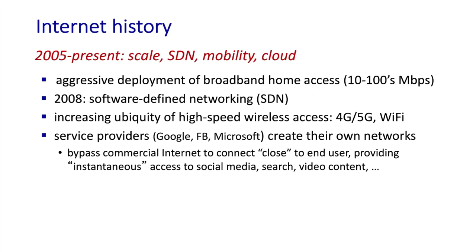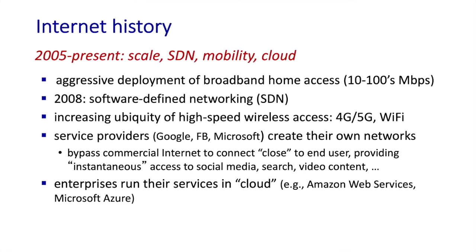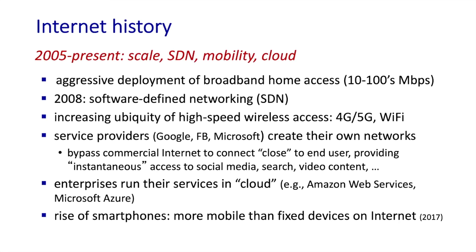These content providers are bypassing the commercial internet tier-one ISPs to connect close to end users, so that they can provide near-instantaneous access to social media, search, and video content. We've also seen enterprises running their services in the cloud through Amazon Web Services and Microsoft Azure — we'll look at data center networks when we get to chapter five. And lastly, we've seen the rise of smartphones and an increased emphasis on mobility. Since 2017, there are actually more mobile devices than fixed devices connected to the internet.